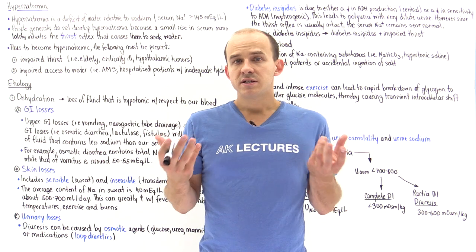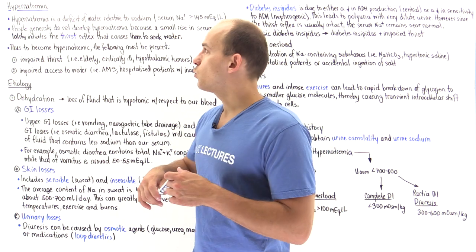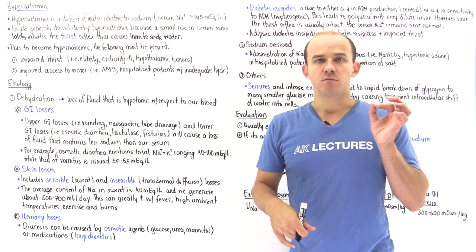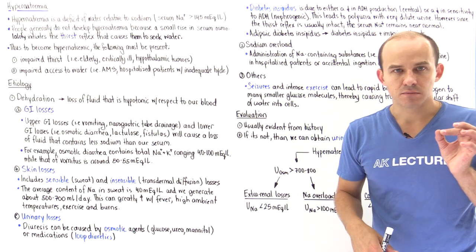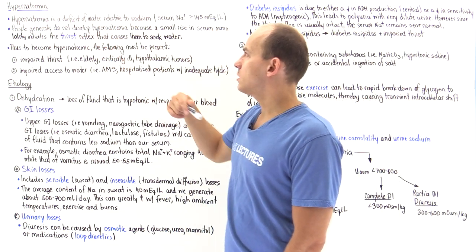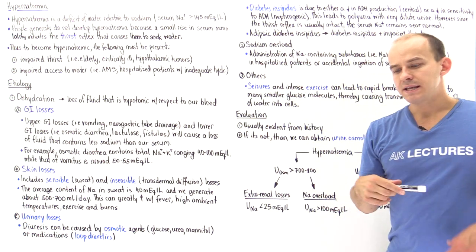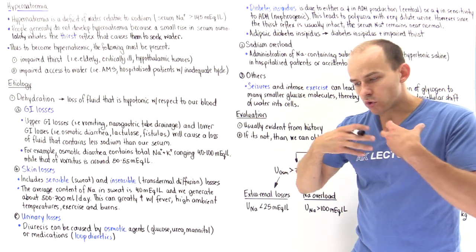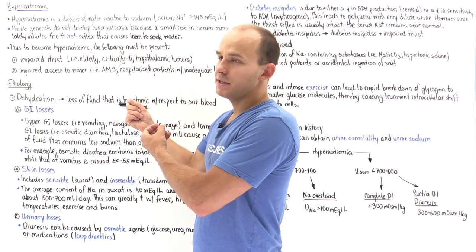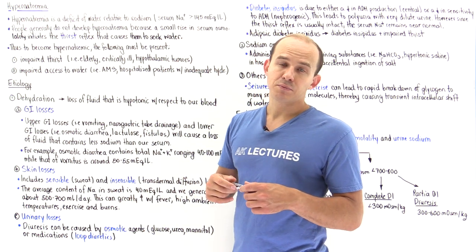The reason we typically become hypernatremic is because we have a deficit of water compared to sodium within our blood. So hypernatremia is a deficit of free water relative to sodium. People who are healthy with normal physiology have a very difficult time becoming hypernatremic — it's very hard to actually become hypernatremic.